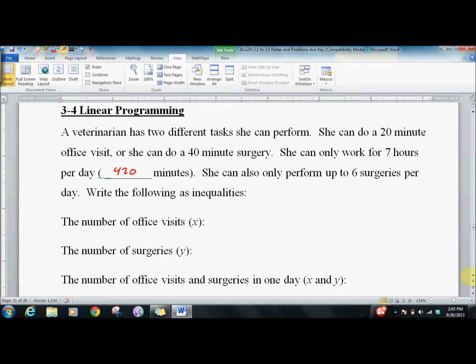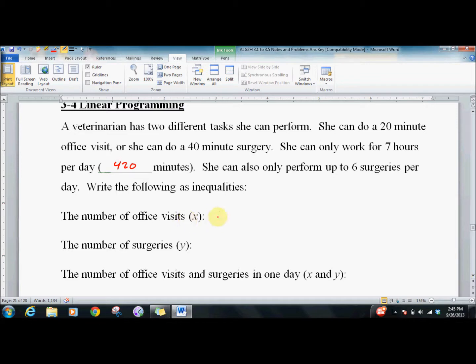Now we need to know the inequalities. The number of office visits: in linear programming, we're generally assuming it's going to be zero or more, but in this case, she's got 420 minutes and it takes 20 minutes, so x has to be less than or equal to 21 also. Number of surgeries: it has to be greater than or equal to zero, and she only can do six surgeries per day, so y is less than or equal to 6.